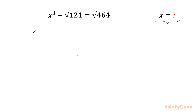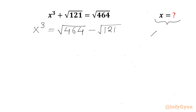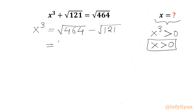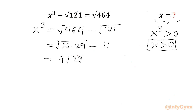Let us get started by writing x³ first. It is equal to √464 − √121. Now we can factor 464 as 16 times 29, and √121 is 11. So we can write x³ = 4√29 − 11.